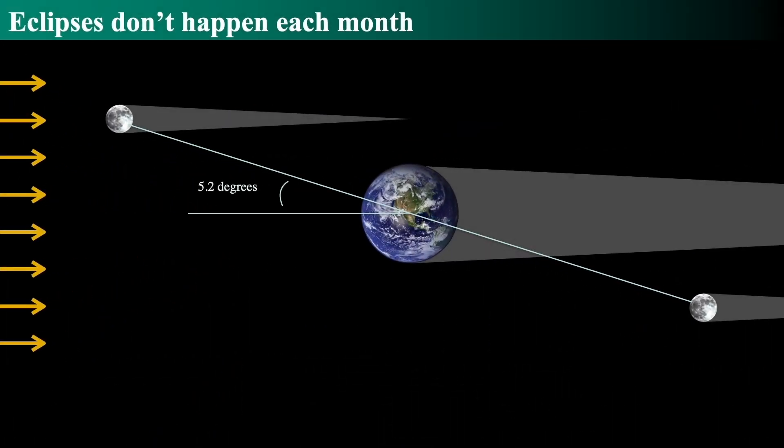It's also important to note that these don't happen every month. And the reason is because the moon's orbit is tilted five degrees with respect to the Earth's orbit around the Sun.